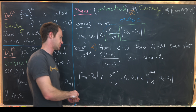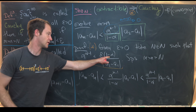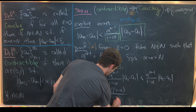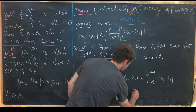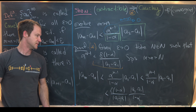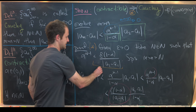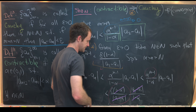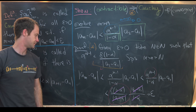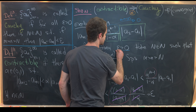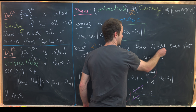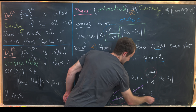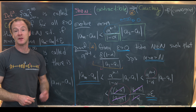Capital N was chosen so that alpha^{N-1} < epsilon times (1 - alpha)/|a_2 - a_1|. Substituting, we get |a_m - a_n| < [epsilon times (1 - alpha)/|a_2 - a_1|] times |a_2 - a_1|/(1 - alpha), and everything cancels to give epsilon. We were given arbitrary epsilon, found a capital N such that m, n > N implies |a_m - a_n| < epsilon — exactly the Cauchy condition. And that's a good place to stop.